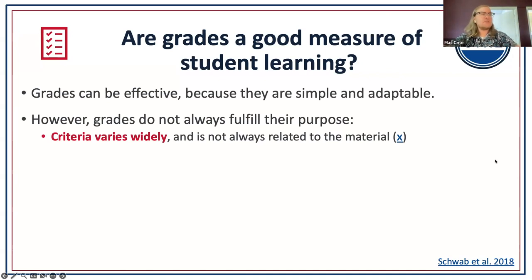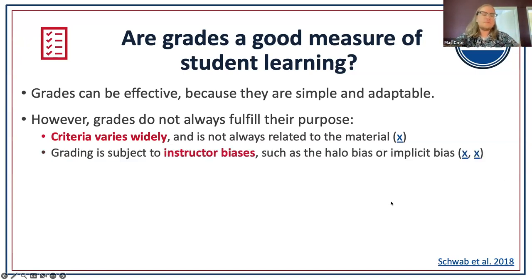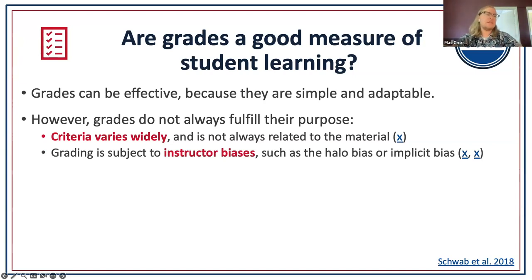We would argue that a lot of times grades don't really fulfill the purposes we have for them. Criteria can vary widely — some people use effort, some use achievement or mastery, some use behaviors like turning something in on time, which isn't really related to the material students are learning. Grading can also be subject to bias, such as the halo bias, which suggests a positive impression of a student can increase a letter grade by up to half a letter grade, even implicitly and unintentionally.